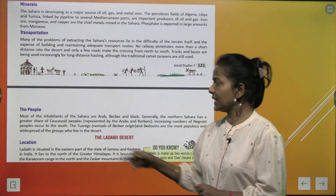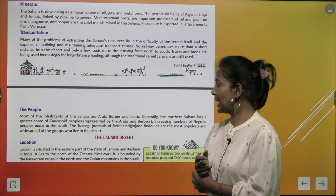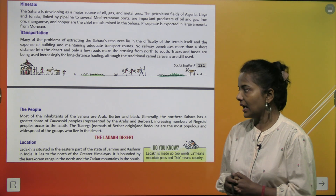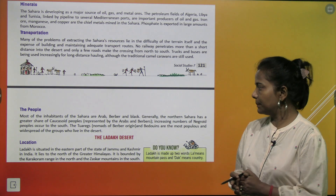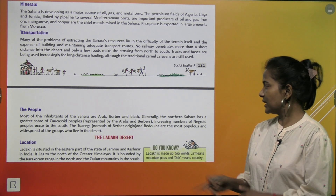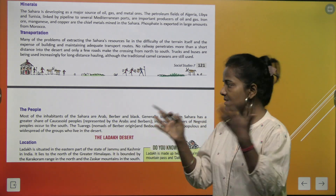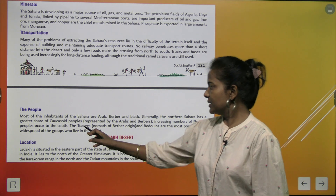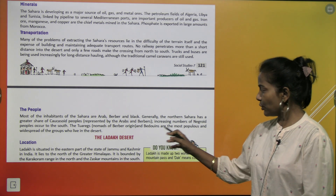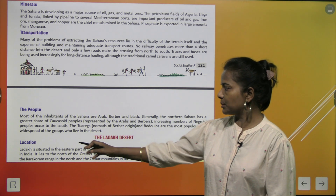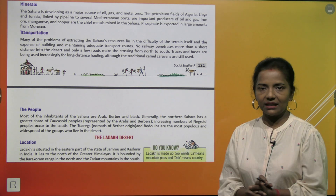The people: most of the inhabitants of the Sahara are Arab, Berber and Black. Generally the northern Sahara has a greater share of Caucasoid people represented by the Arabs and Berbers, while increasing numbers of Negroid people occur to the south. The Tuareg nomads of Berber origin and the Bedouins are the most populous and widespread of the groups who live in the desert.